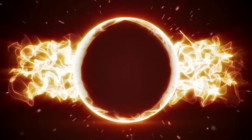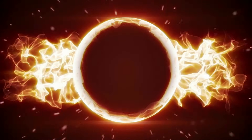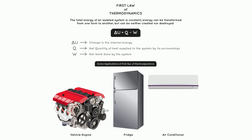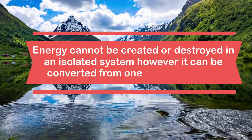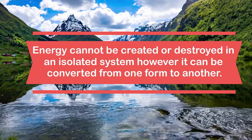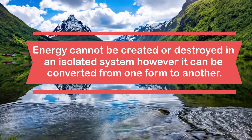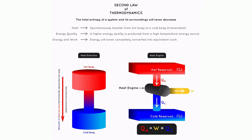So where does this energy go? Most of the energy is lost as heat. The energy flow in an ecosystem follows the laws of thermodynamics. The first law states that energy cannot be created or destroyed in an isolated system; however, it can be converted from one form to another. The second law states that this energy conversion is never completely efficient, and as a result, most energy is lost as heat.